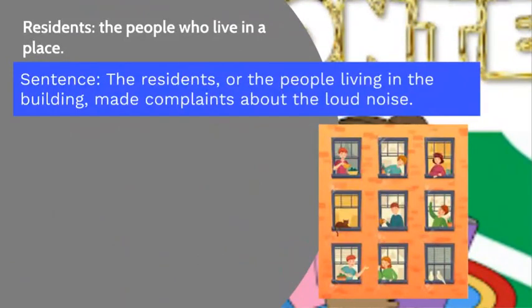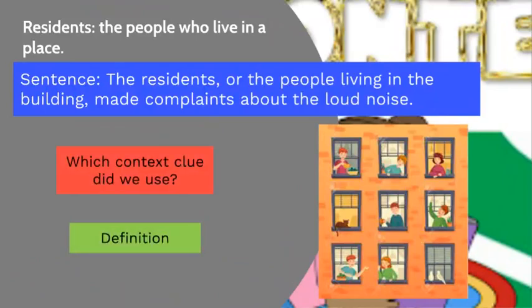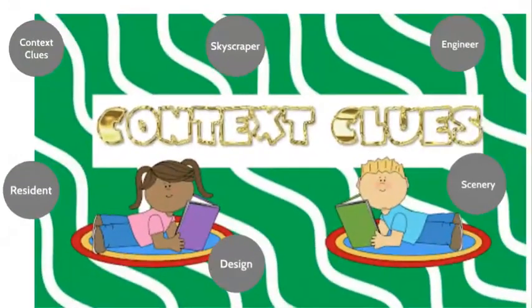Our last word for today is 'residents.' Residents are people who live in a place. Here's a sentence: 'The residents, or the people living in the building, made complaints about the loud noise.' Which context clue did I use? Well done to the students who said definition — the definition of 'residents' is right there in the sentence: the people who live in the building. I hope you understood the new words. Now make sure to choose three words and write a meaningful sentence for each.